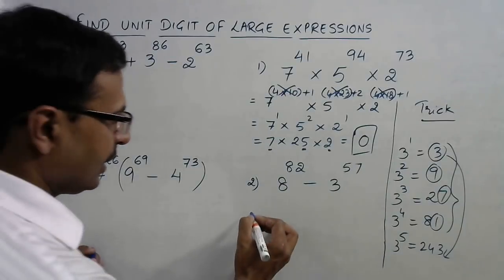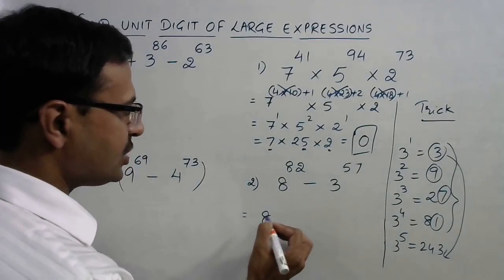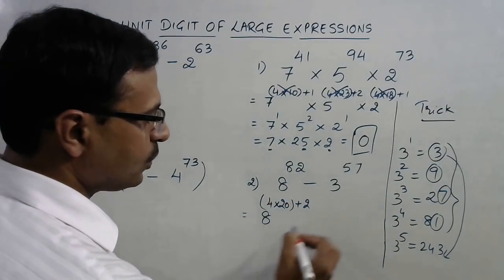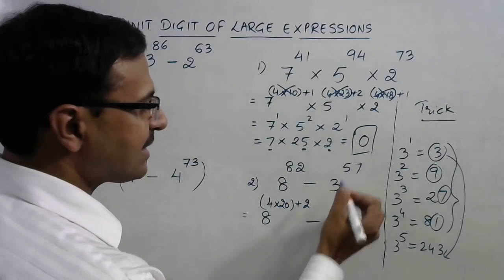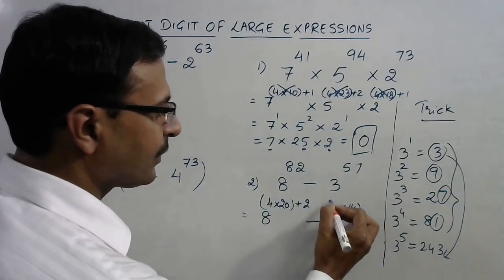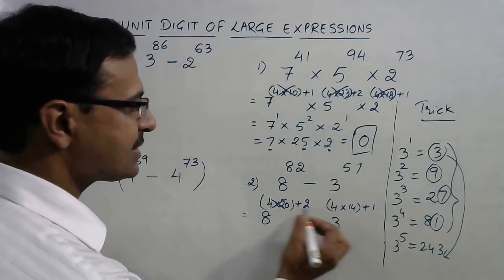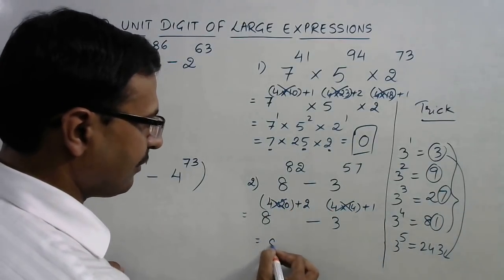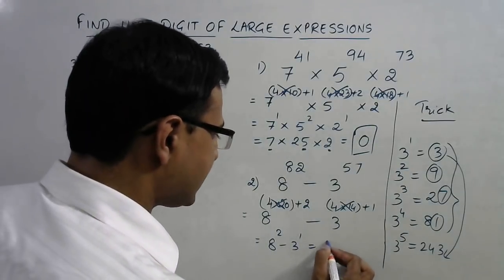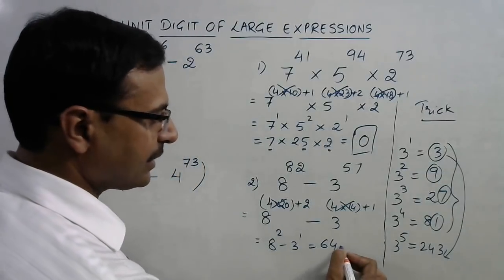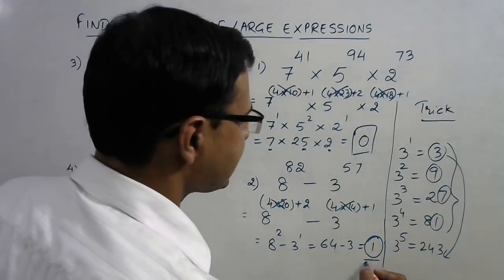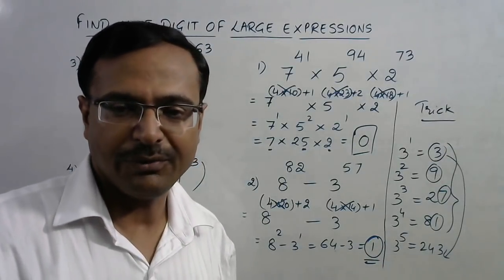Let us see this question. Now, see 8 raised to power 82. 82, 4 into 20 is 80 and you are left with plus 2. And 3 raised to power 57. We all know that 56 is divisible by 4, so 14 into 4 is 56 plus 1 is 57. Eliminate these multiples of 4. You have 8 raised to power 2 minus 3 raised to power 1. Now, 8 raised to power 2 is 64, so you have 4 here and 3 here. Unit digit will be 4 minus 3, 1. In this case, you will have unit digit 1.